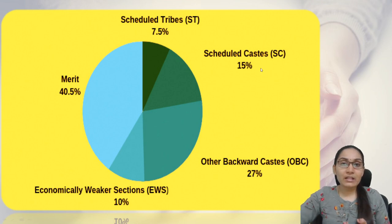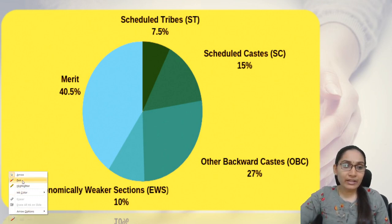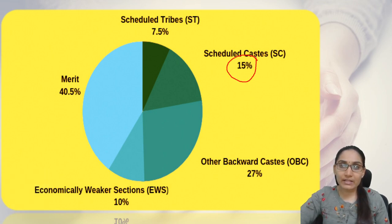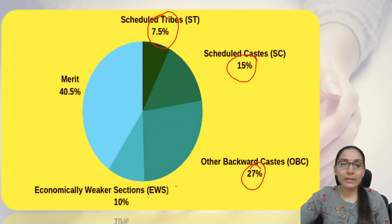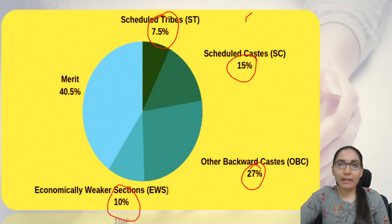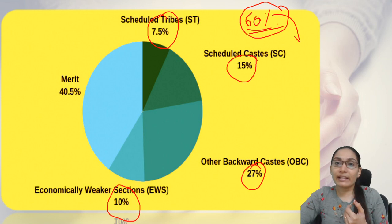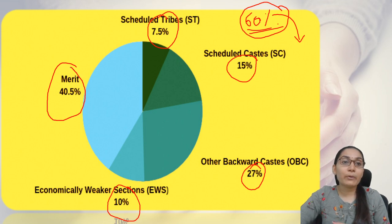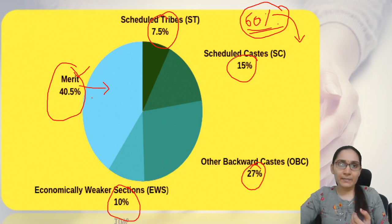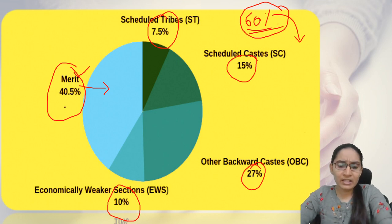The total reservations in our country now are: Scheduled Castes — 15%, Scheduled Tribes — 7.5%, OBC — 27%, and EWS — 10%. Altogether, about 60% of total vacancies or seats in jobs or educational institutions are reserved. This is a clear violation of the Supreme Court's observation in the Indira Sawhney case, leaving only 40.5% of seats available under general merit.